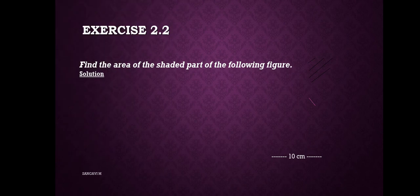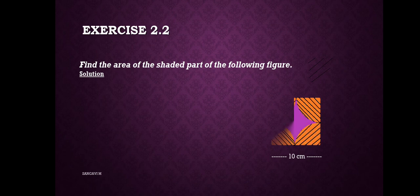Our first question is to find the area of the shaded part of the following figure. This is our figure. It's a square and it contains four circular quadrants on its four corners.